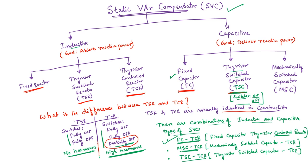One is inductive type of reactive power, another is capacitive type. In this course we will discuss all these different types. For example, the TCR — thyristor controlled reactor — which is one type of static var compensator, I discussed in detail. And in the last lecture I discussed FC-TCR, which is a combination of fixed capacitor and TCR.